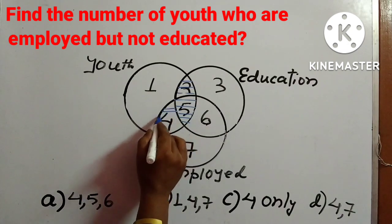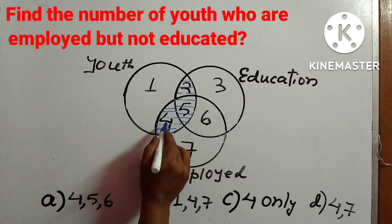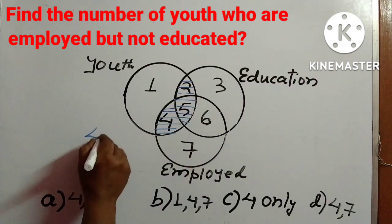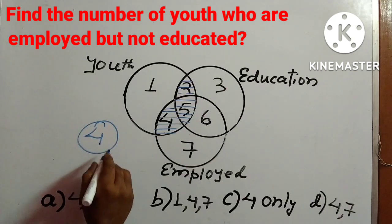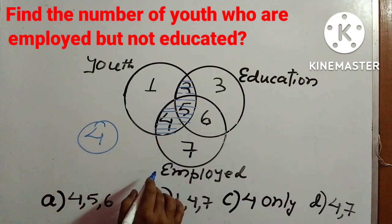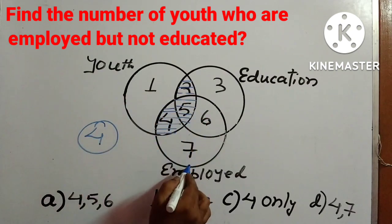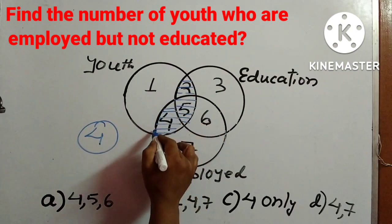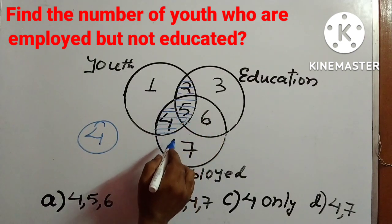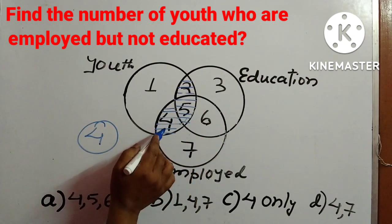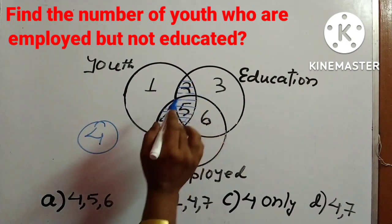Which portion? This one. Four is the number of youths who are employed but they are not educated — do not consider this other part. The intersection part of youth and employed is the entire four plus five. But the question asks about the number of youth who are employed, not educated.